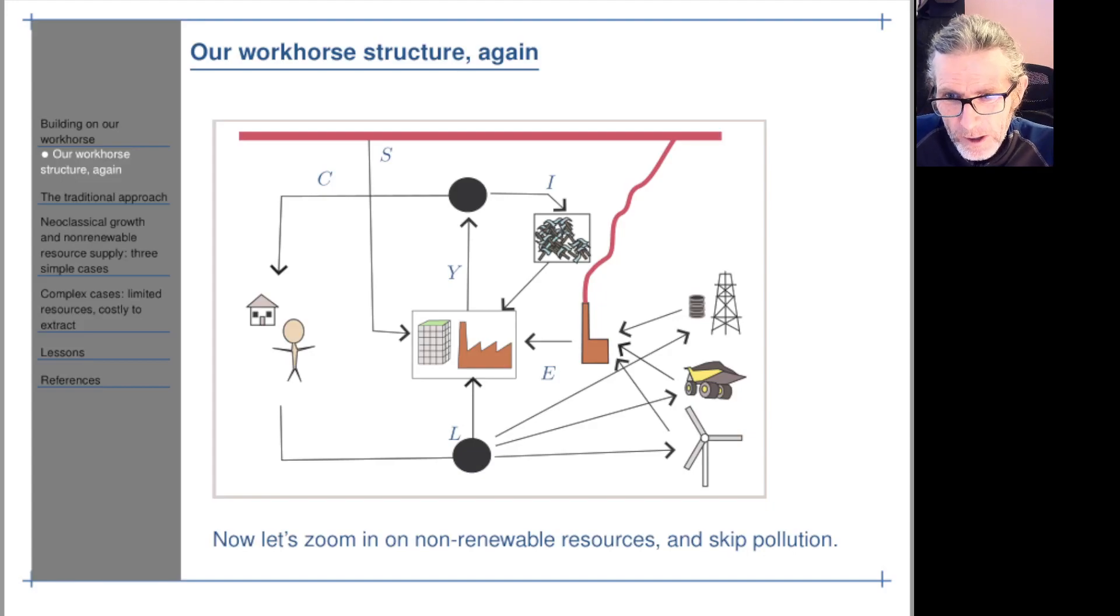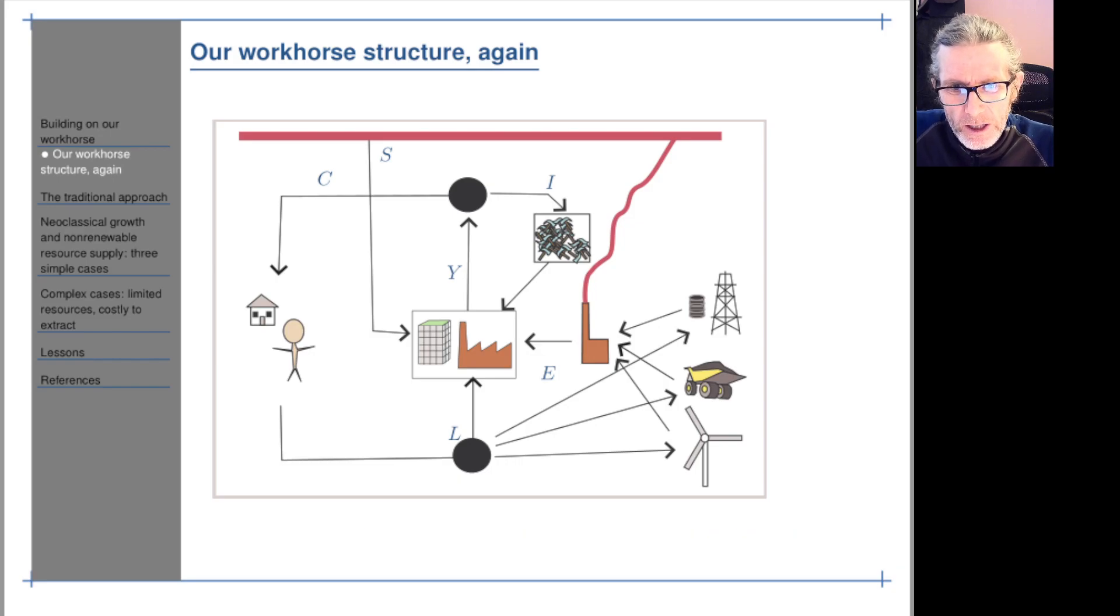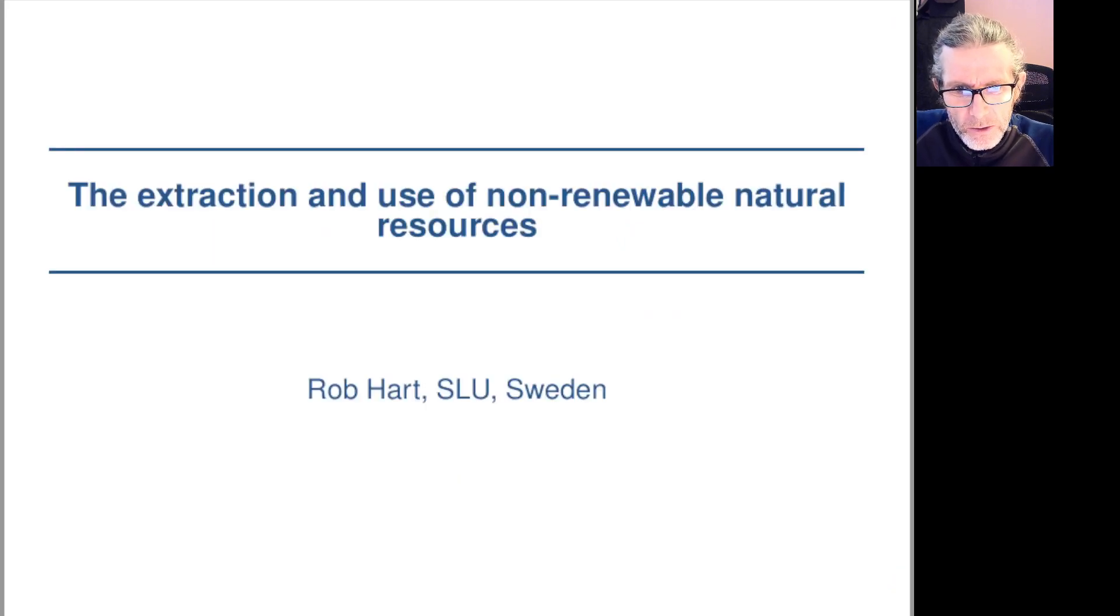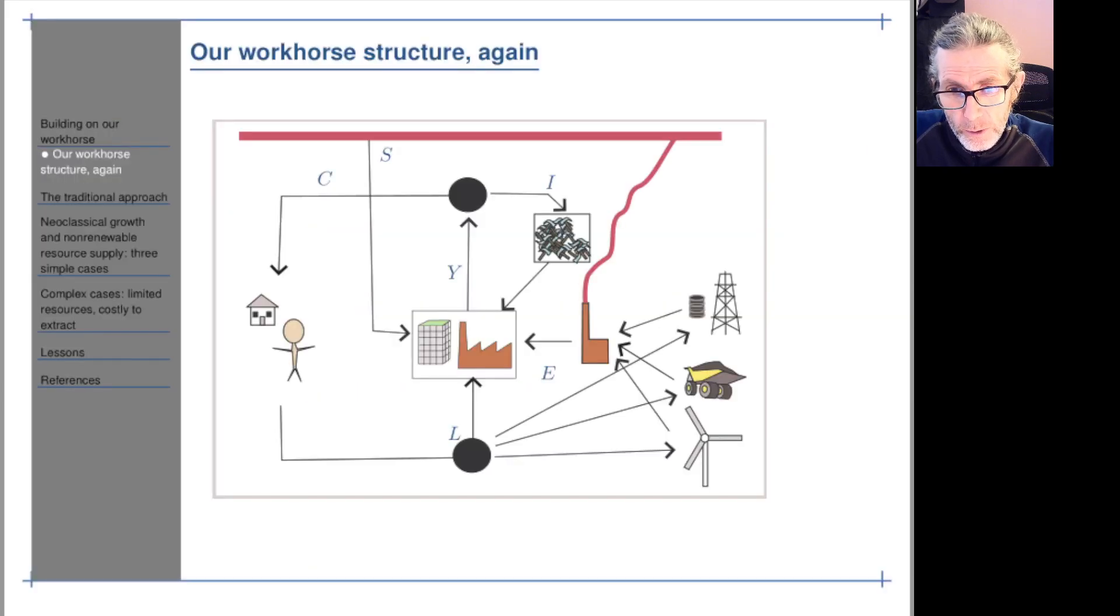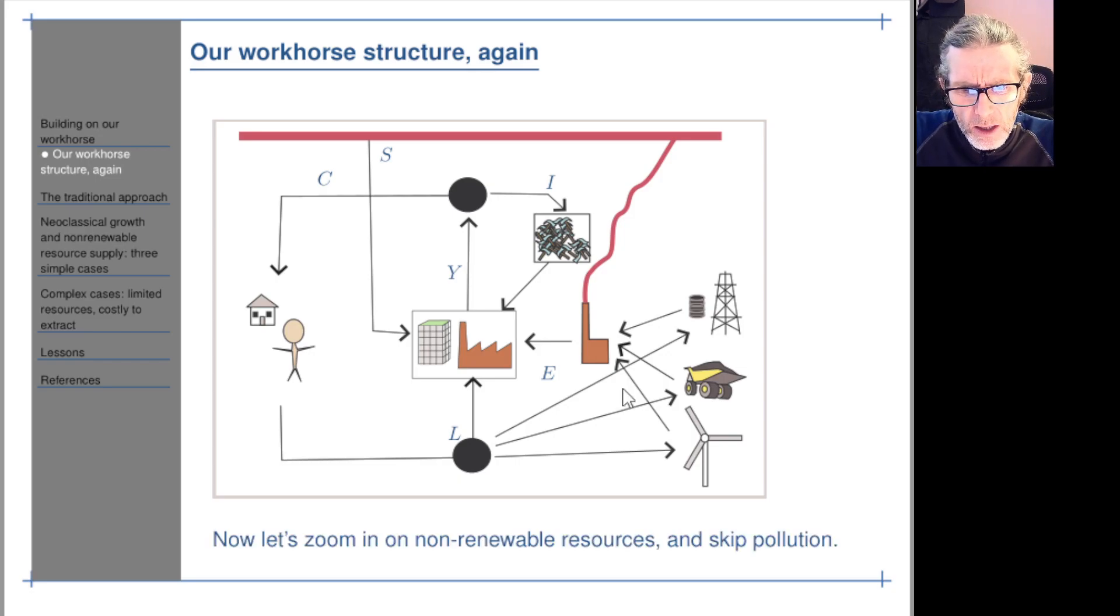So we've looked at resource extraction and use of non-renewable resources - three special cases in isolation. Now we're going to look at what if there's a resource that initially is super abundant, we're just scratching the surface, nothing happens to depth, then we have a constant flow and then it starts running out. Can we combine all that in one model? It turns out that we can, and that's what we're going to look at now.